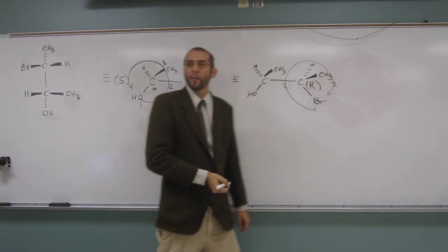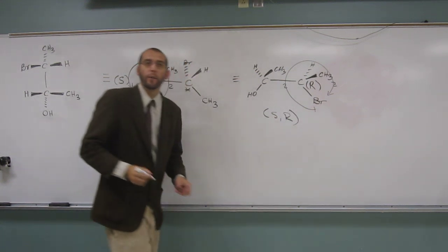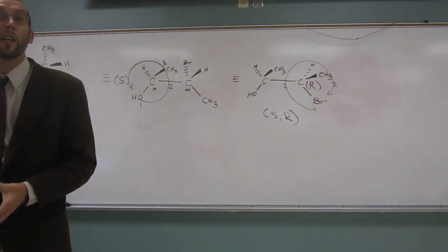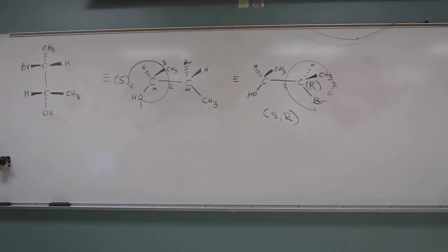So since it's clockwise, that's R. So what do we have here? SR. Okay, that's actually a diastereomer of the one that we just had, right? Any questions on this one? Make sense how we did that? Okay, good.